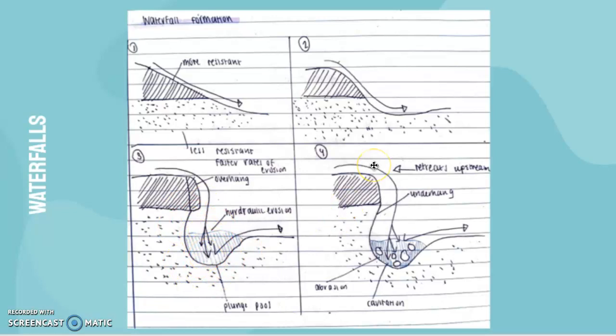Then we move to this stage where the overhang actually falls into the plunge pool. We have more abrasion, cavitation, and the plunge pool keeps getting bigger. This keeps retreating backwards and actually begins to form a gorge.